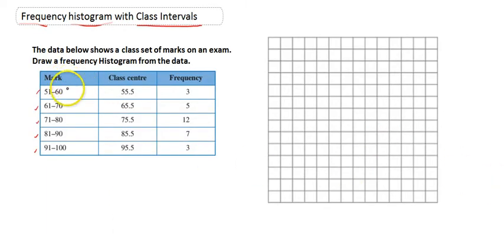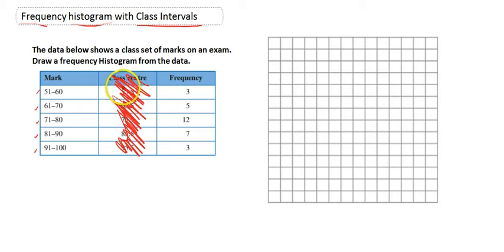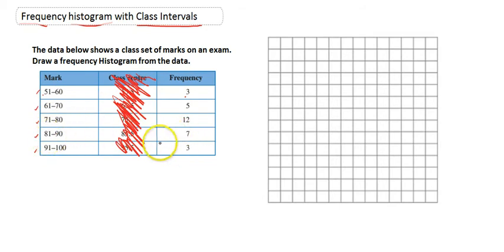Now it's already been done in this picture, but you might get a question where this column wasn't present. So you might just be told: here are the marks — this is a class set of marks for an exam. For example, 3 people got a mark between 51 and 60, 5 people between 61 and 70, 12 people between 71 and 80, 7 people between 81 and 90, and 3 people between 91 and 100. The first step when drawing the frequency histogram is to create that class centre column — the one I just rubbed out.